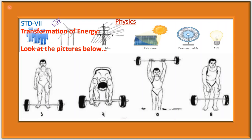Look at the picture. After having various types of food, the weightlifter gains energy. The energy stored in the food is chemical energy. After eating, chemical energy is stored in the body of the weightlifter. When the weightlifter tries to lift the load, chemical energy is converted into kinetic energy, and then kinetic energy is converted into potential energy. When he throws the lift, the potential energy is again converted into kinetic energy, sound energy, and thermal energy.